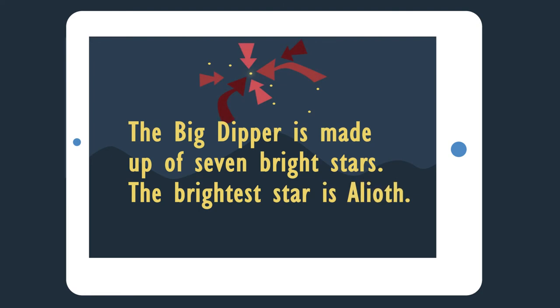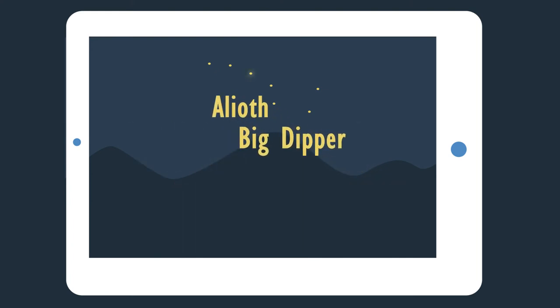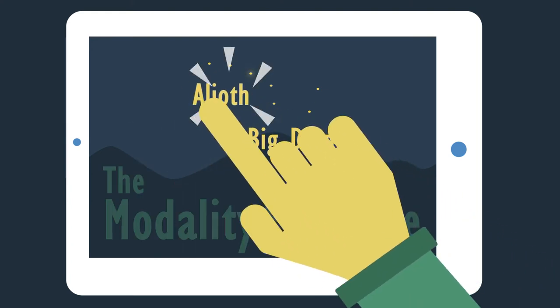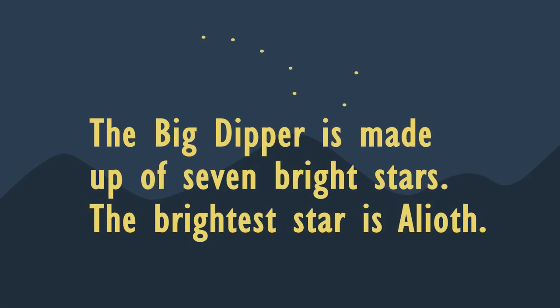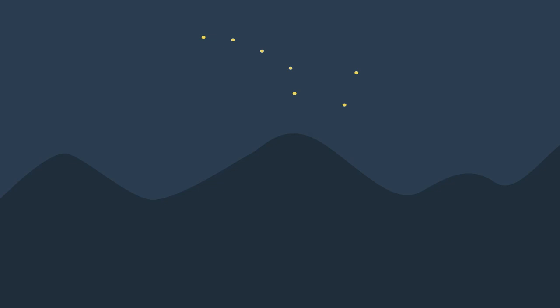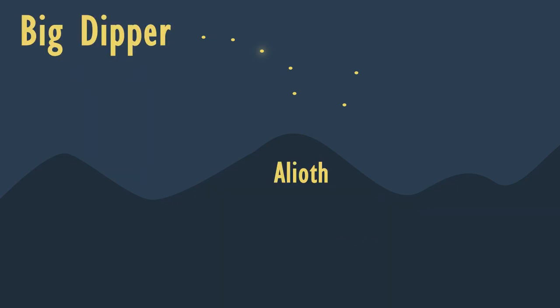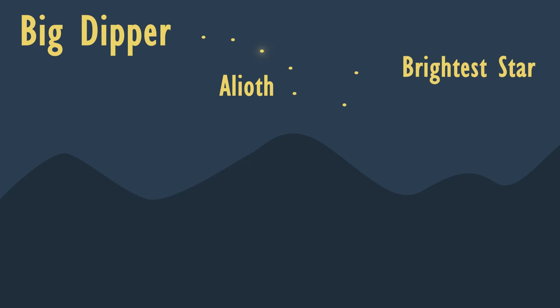Because the narration is already covering this information. We'll leave the names of the stars on-screen as a visual trigger because they work with the narration, not against it, which is the modality principle. The redundancy principle doesn't mean you have to eliminate all on-screen text when you add narration — it just means you have to be smart about what you add. Putting an on-screen title on this page, using text to draw attention to the star names, or even adding 'brightest star' along with a gigantic arrow pointing to Alioth doesn't compete for your attention. It actually reinforces what you're learning.